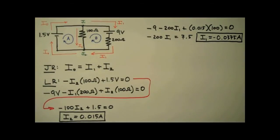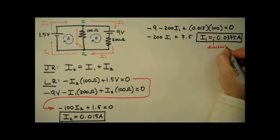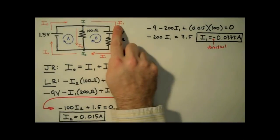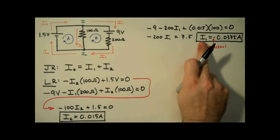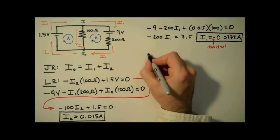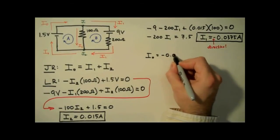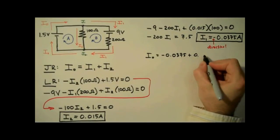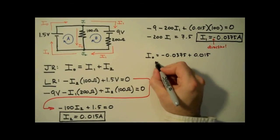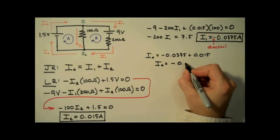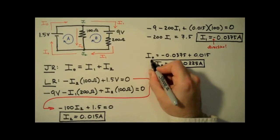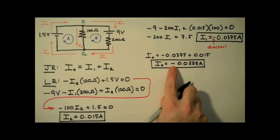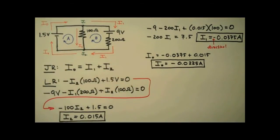So what does this negative sign tell us? It tells us that the direction we chose for I1 is the wrong direction. Remember how we picked it arbitrarily at the beginning of the problem? Here's where we find out that the actual direction of positive charge flow is the other way. Now we know the correct direction of the currents. We plug I1 and I2 into the junction rule to find I0: I0 equals negative 0.0375 plus 0.015, which gives negative 0.0225 amps, or negative 22.5 milliamps. Again, this negative sign tells us I0's actual direction is opposite to what we assigned.